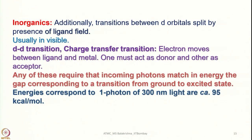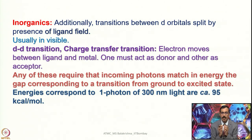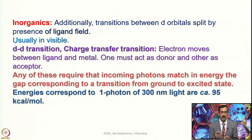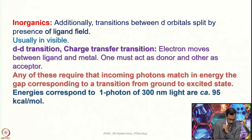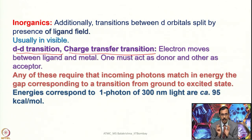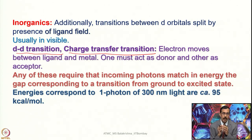The most common transitions among double-bonded or unsaturated systems are n→π* and π→π*, observed in compounds with lone pairs and multiple bonds, with λ_max in that range. In inorganics it is a little different — additionally there are transitions between d orbitals split by the ligand field. We have seen in ligand field theory how d orbitals are split based on the influence of the ligand field. So additionally beyond σ→σ*, π→π*, and n→π* transitions, we also come across d-d transitions. Usually d-d transitions occur in the visible region. Besides d-d transitions in metal complexes, we also come across charge transfer transitions.